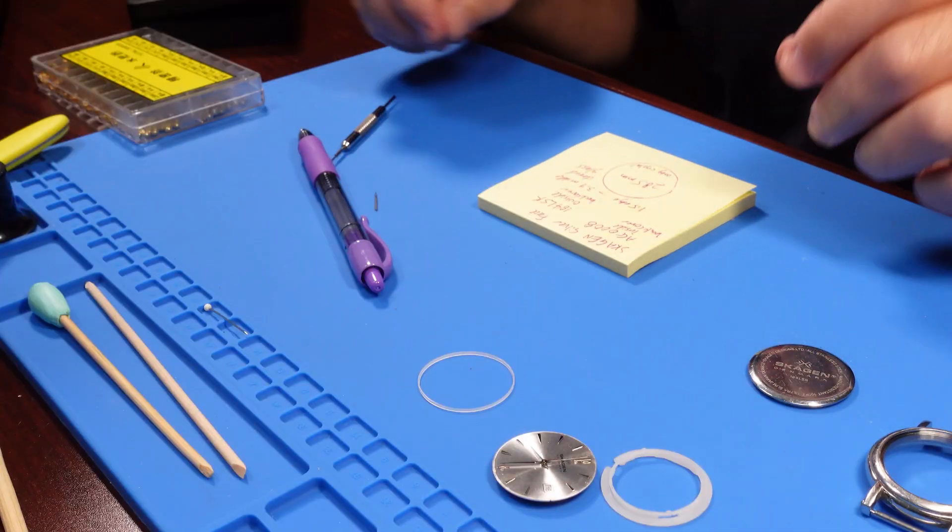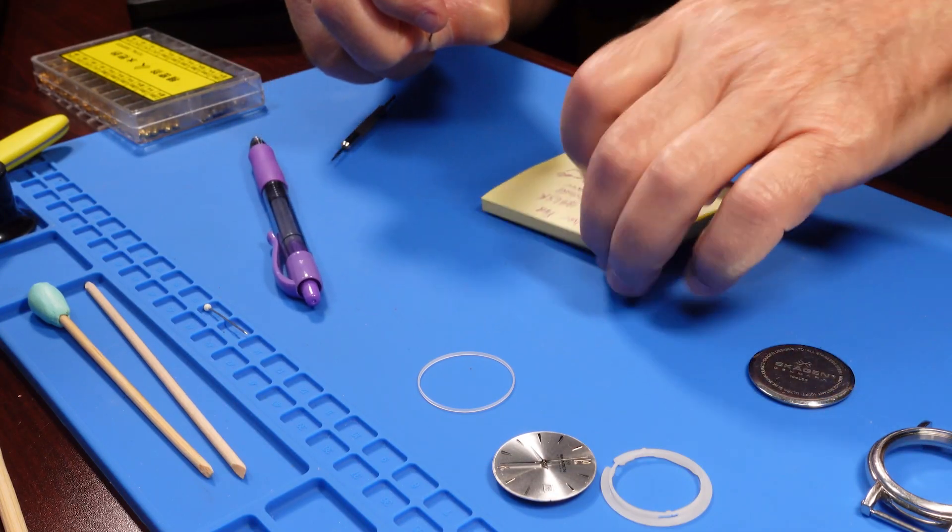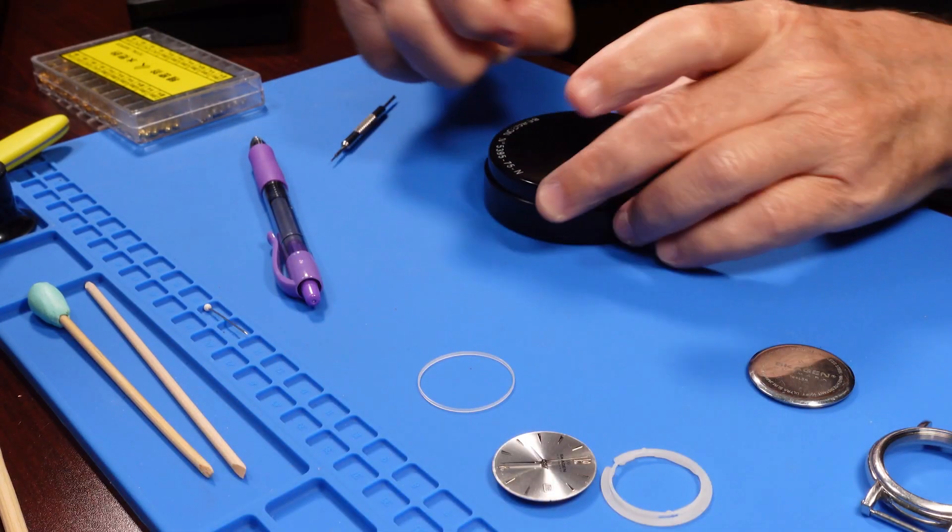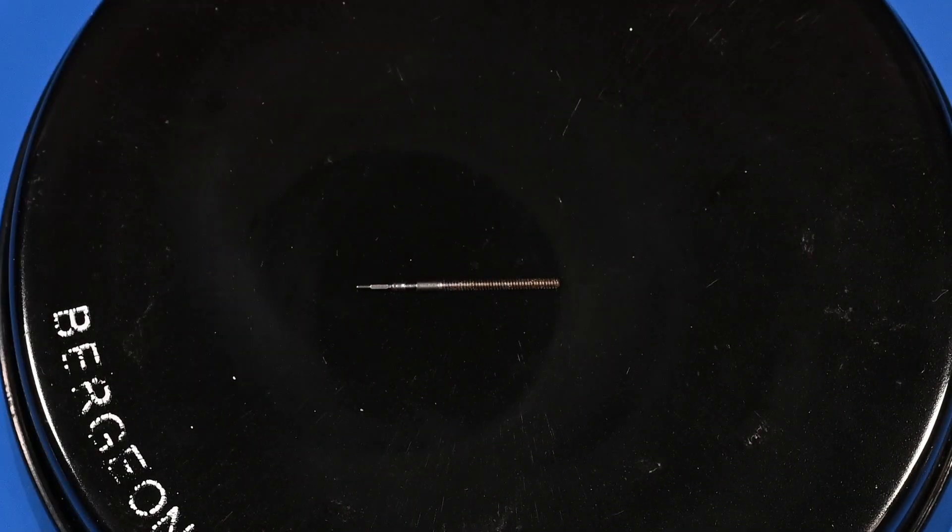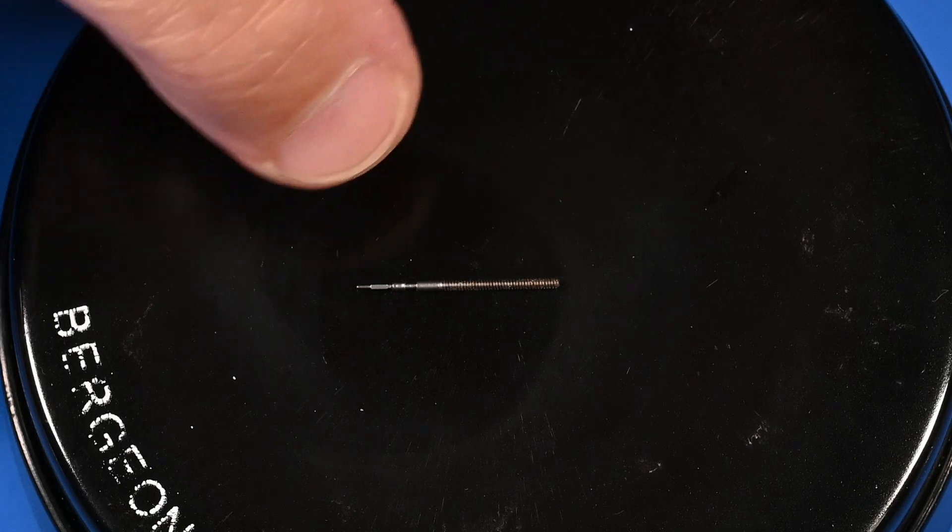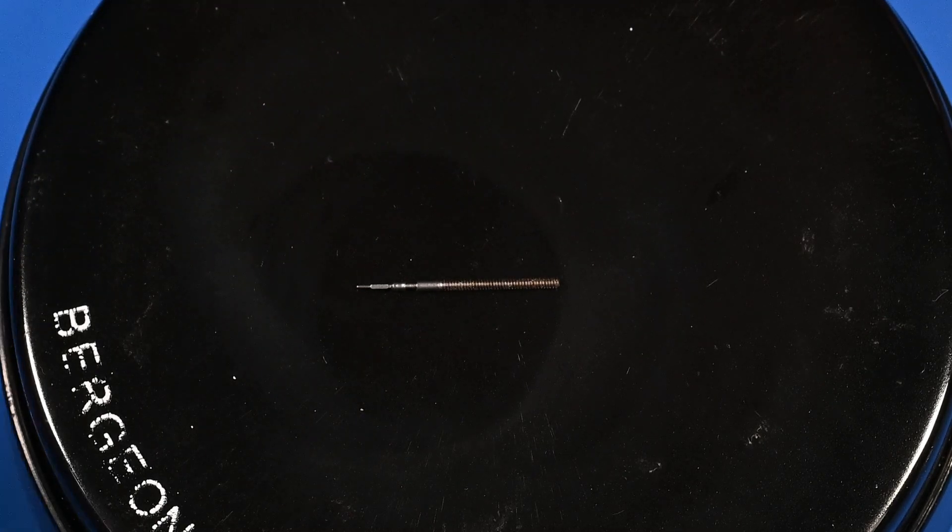The next issue is this. So this is the winding stem. There was a winding stem in there. And I don't know if it's broken or if it just lost its crown. If it got decrowned.